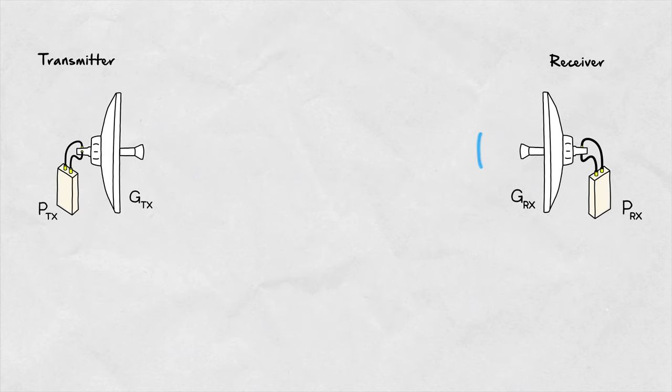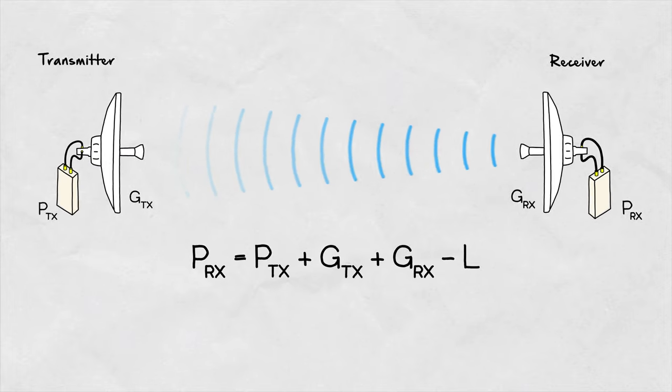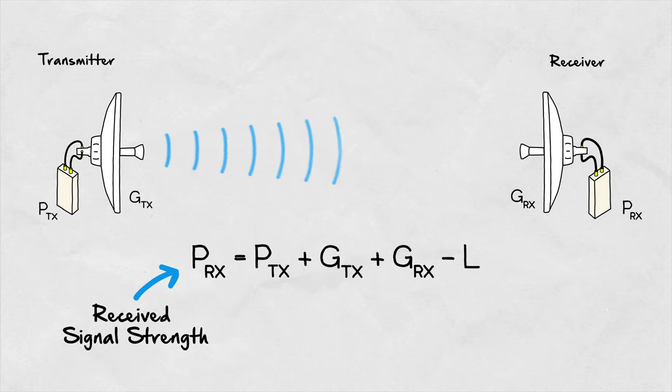On the receiver side, the antenna has a given gain, GRX. Combining all these together gives us what we're looking for, PRX, the power at the receiving side.